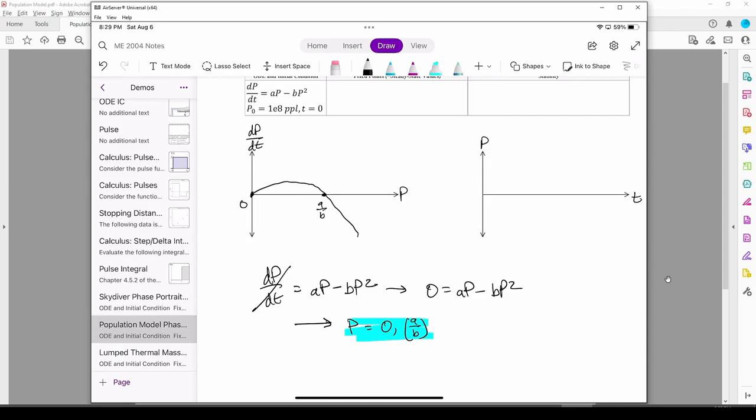I connected the two fixed points with an inverted parabola since the ODE structurally resembles one. Now we need to classify the fixed points. The portion from 0 to a/b is positive, so we draw a right arrow. If we extrapolate the plot into the negative p region, the derivative will be negative, so we draw a left arrow in the region from negative infinity to 0. We also draw a left pointing arrow in the region from a/b onward since the derivative is also negative within that region as well.